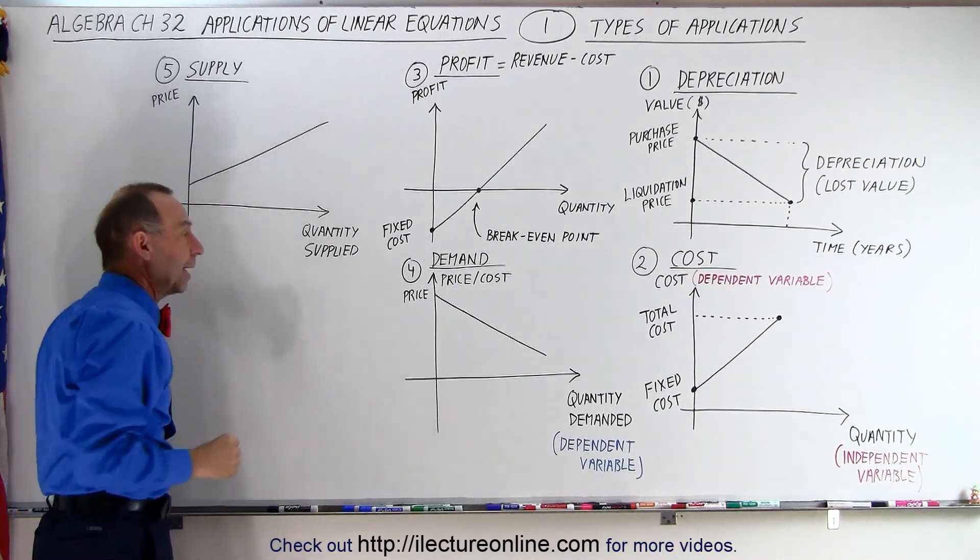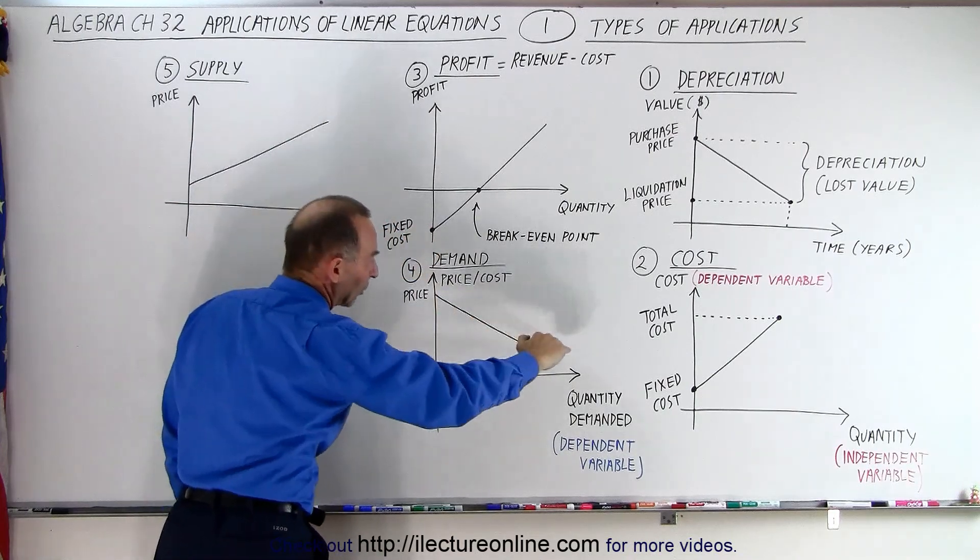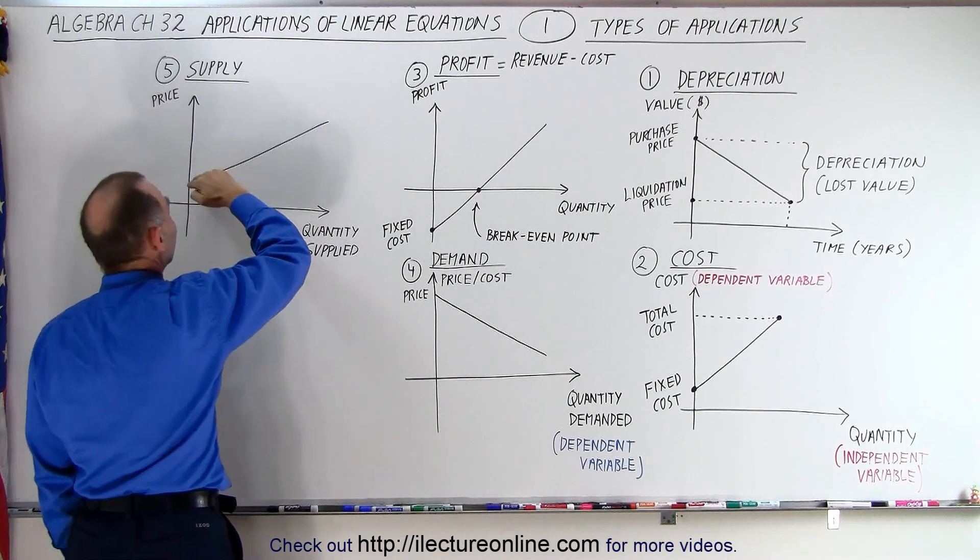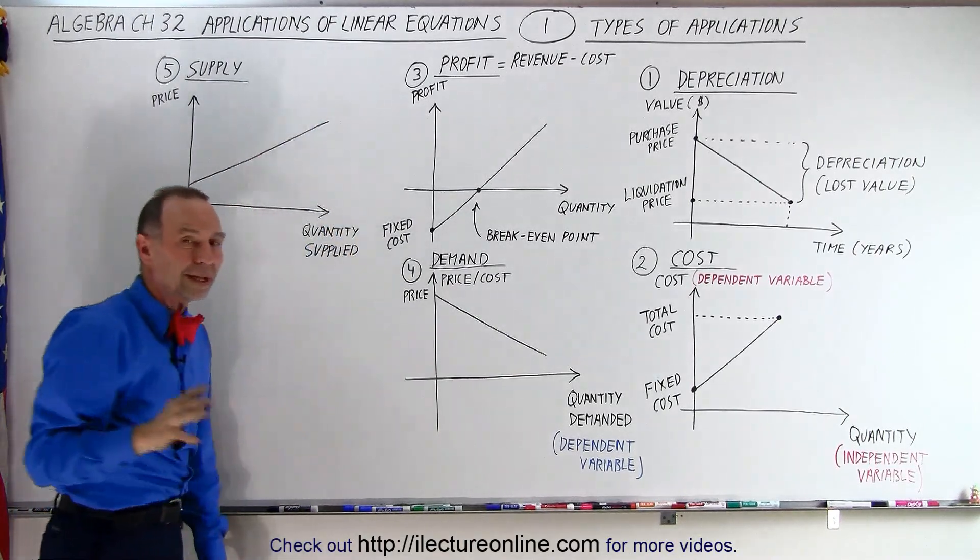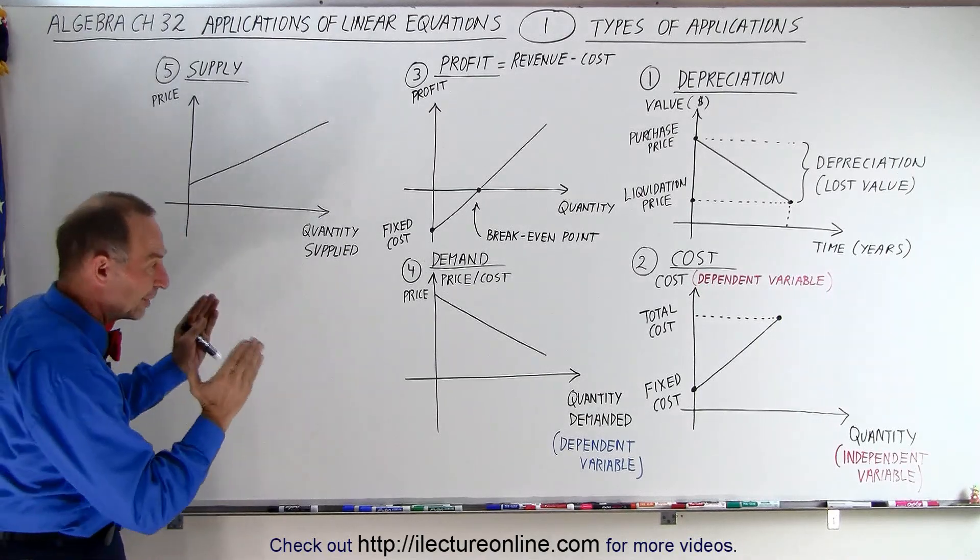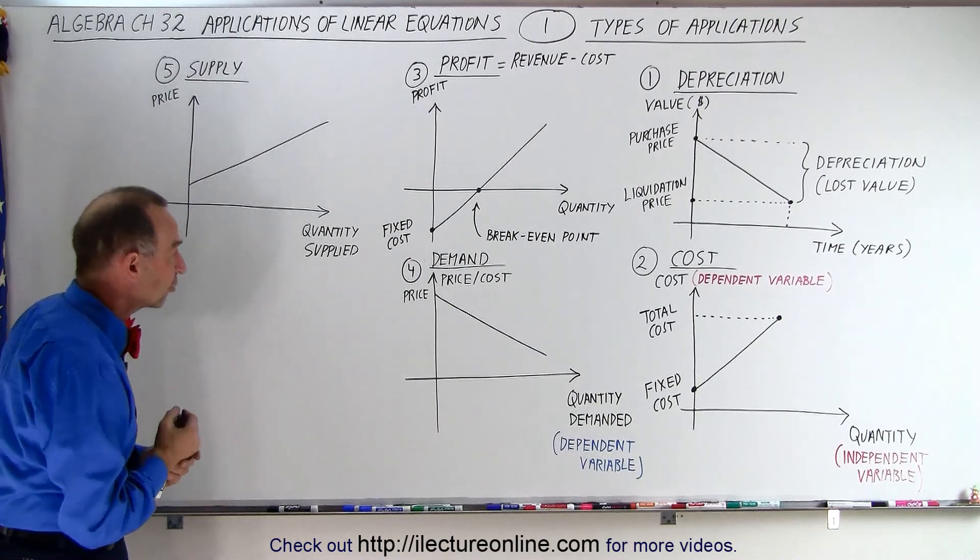Then we can also have the supply graph. Again, linear supply. Now notice that at the very limits of our curves, it doesn't really work. The demand curve is usually a second order curve and the supply curve tends to be a second order curve as well. But at least a linear example or a linear application works fairly well for a particular range. And often to make it simple, we use linear functions like this.